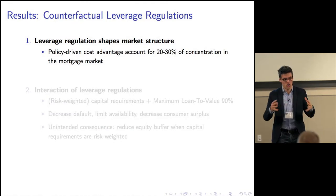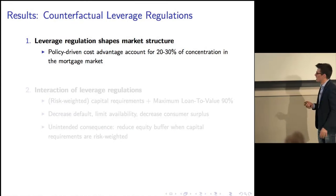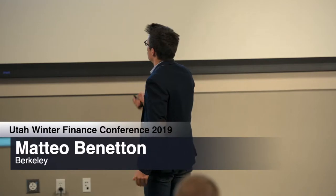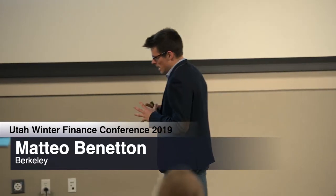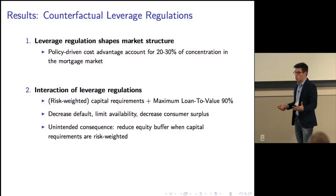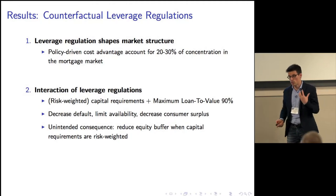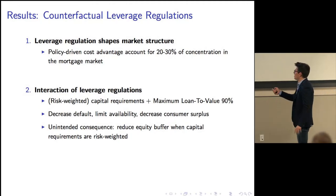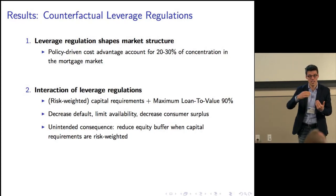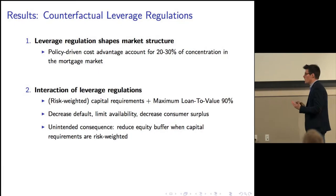What matters most is the heterogeneity in this type of regulation. I show in the first counterfactual that the type of regulation in place can really shape competition — removing the regulation-driven cost advantage makes the market 20 to 30 percent more competitive. Moreover, in a second set of counterfactuals, I study how demand-side regulation — limiting household leverage — interacts with supply-side capital requirements. I find this regulation unsurprisingly decreases default, but it also has costs for consumers in terms of availability, with consumer surplus going down, and it can have unintended consequences: in a system with risk-weighted capital requirements it actually decreases the equity buffer of large lenders.